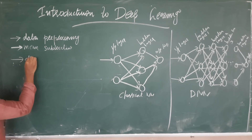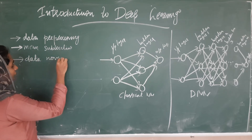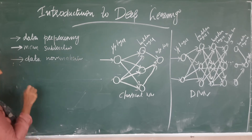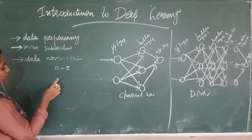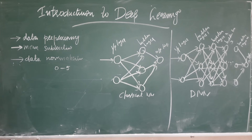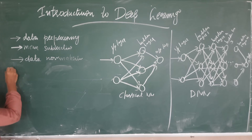Another step is data normalization, which means keeping a fixed scale across different dimensions. For example, if you have movie ratings, you can keep them between 0 and 5. If values fall outside that scale, you normalize them within it. One method to do this is to divide the data points by the standard deviation of the data.